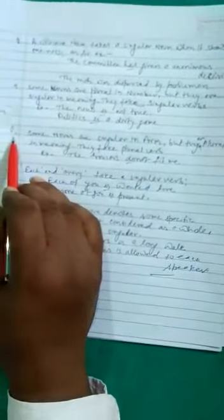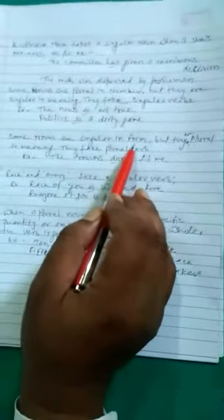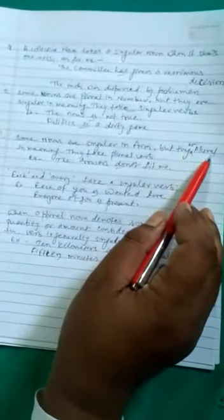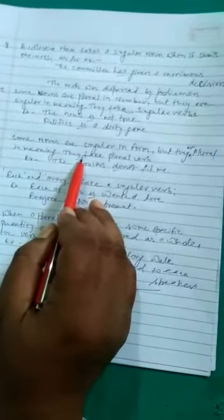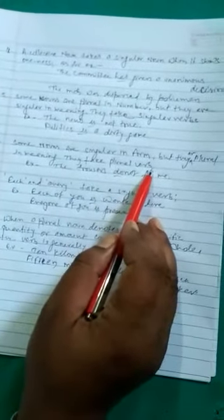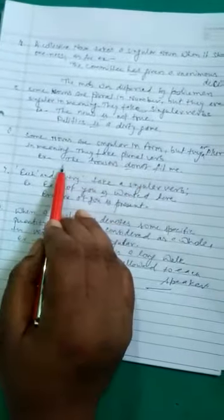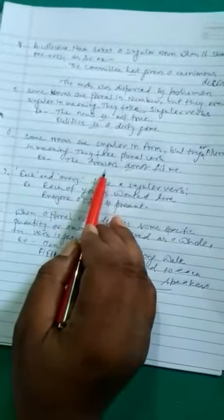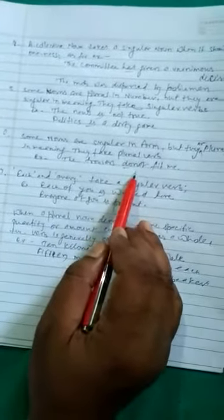Rule six. Some nouns are singular in form but they are plural in meaning. They take plural verb. As for example, the trousers do not fit me.